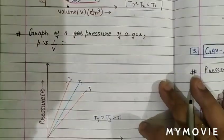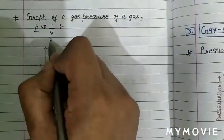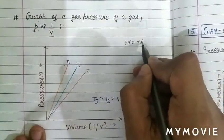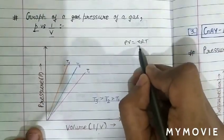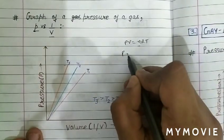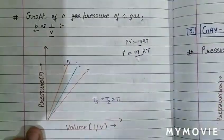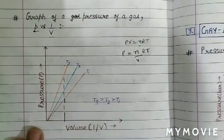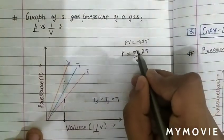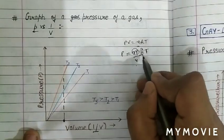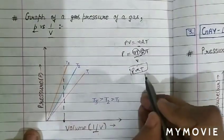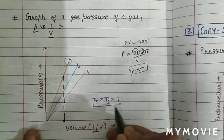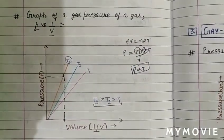For the graph of P versus 1/V with multiple temperatures: using P = (nRT)·(1/V), with n, R, and 1/V constant, pressure is proportional to temperature. So the highest pressure line corresponds to the highest temperature. If three lines are shown, the order is T₃ > T₂ > T₁, reading from highest to lowest pressure.